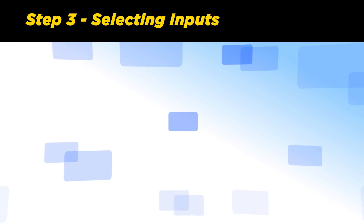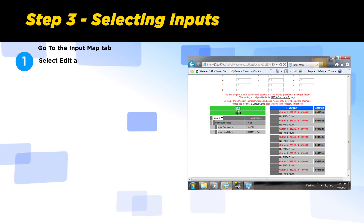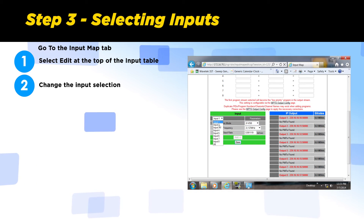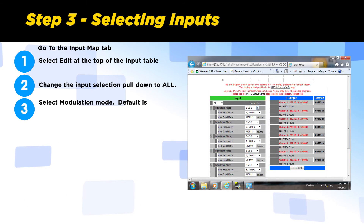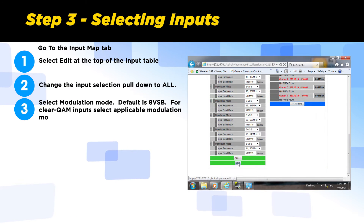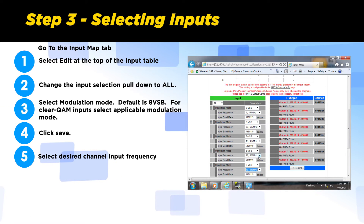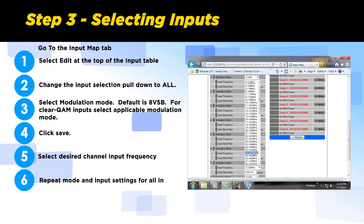Step 3: Selecting inputs. Go to the Input Map tab and select Edit at the top of the input table. Change the Input Selection pulldown to All. Select the modulation mode — the default is 8 VSB, which we are using in this application. For clear QAM inputs, select the applicable QAM modulation mode and click Save. Select the desired channel input frequencies and repeat the modulation mode and input settings for all inputs. Click Save.